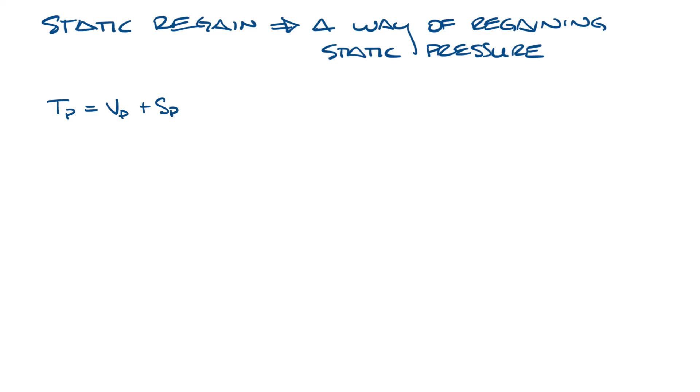So if the total pressure remains the same, a change in the velocity pressure will result in the opposite change in the static pressure. So if the velocity pressure goes down, the static pressure goes up. In other words, you regain static pressure.